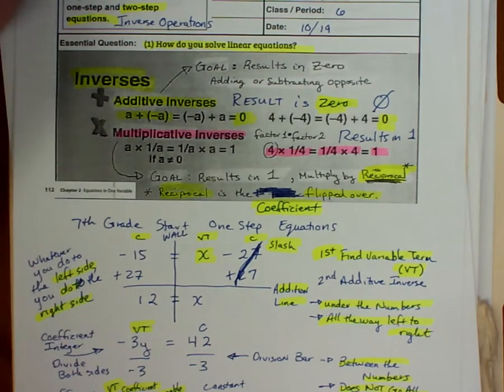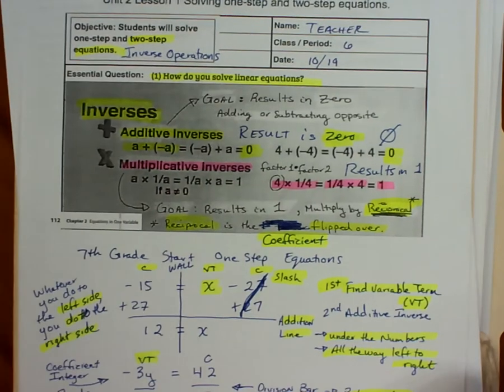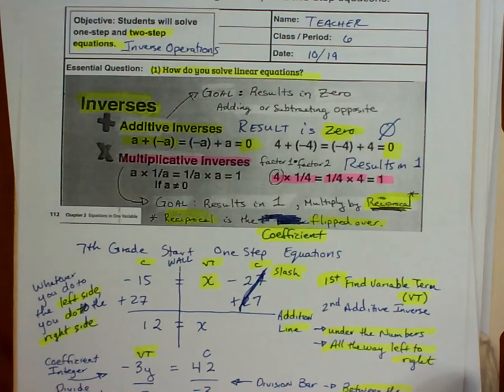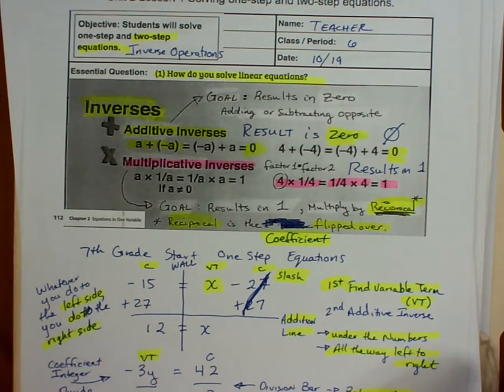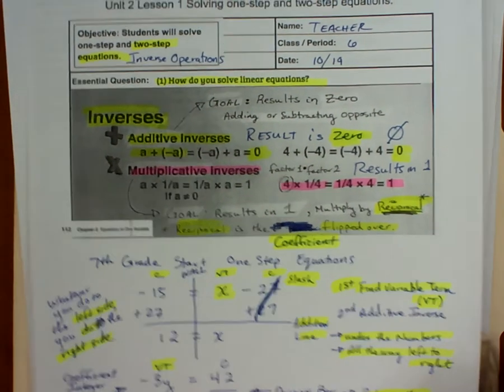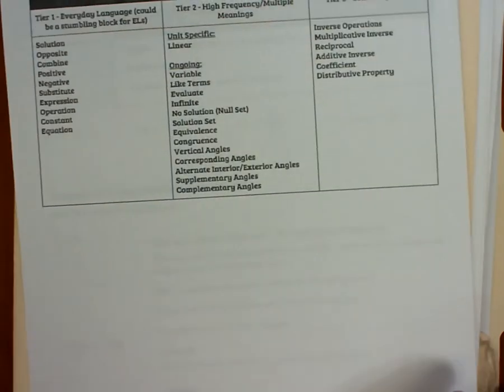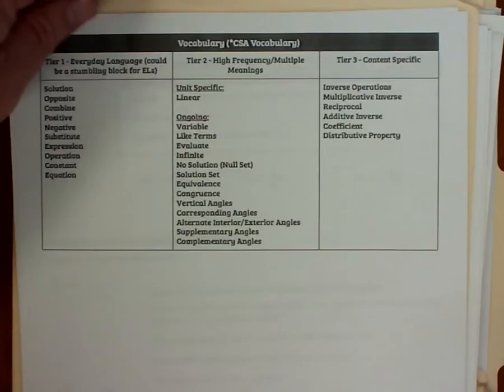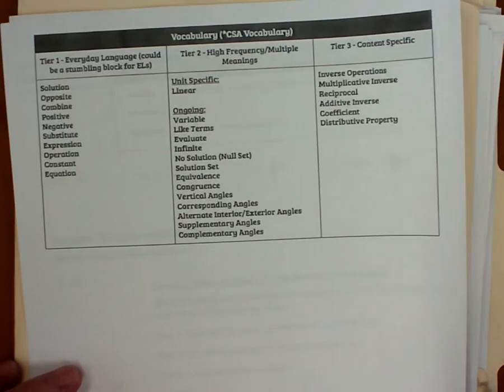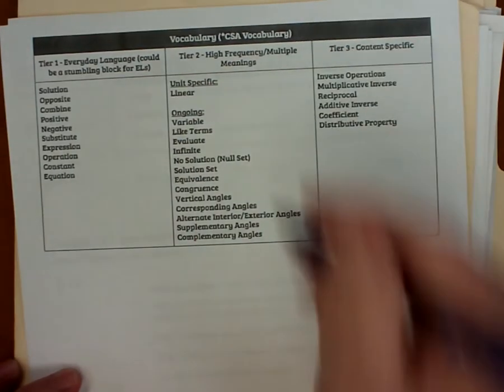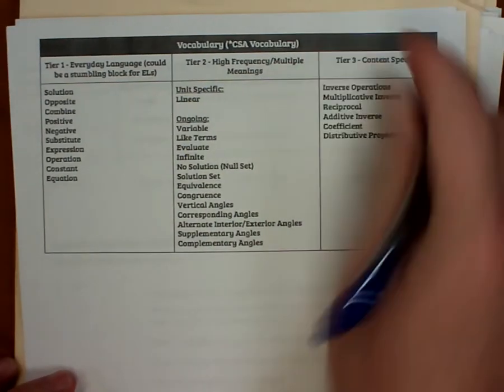Almost all the time, you end up with two-step equations. So you have your notes — go ahead and flip to page 2.